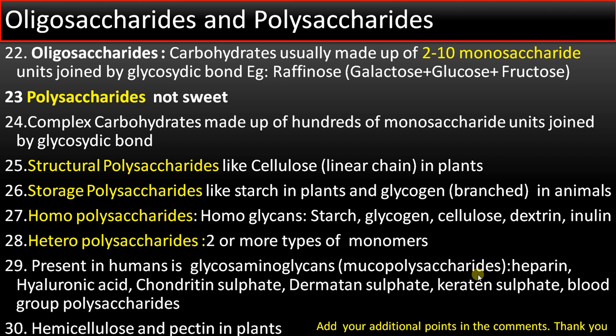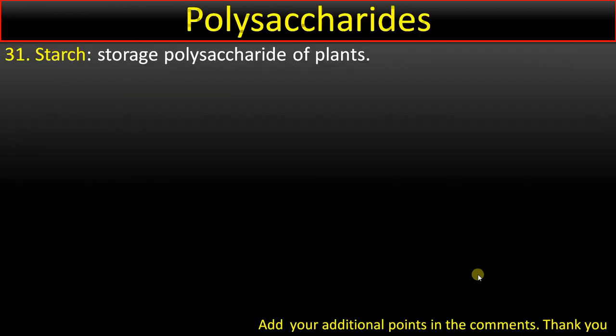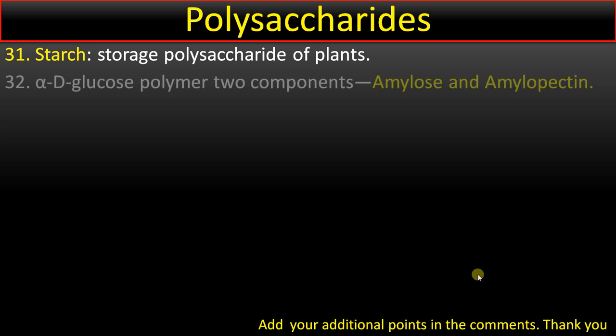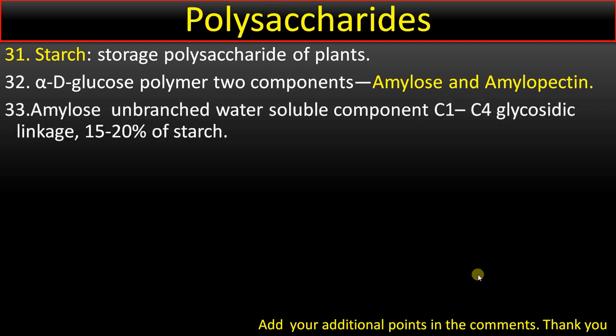Point number 30: hemicellulose and pectin are carbohydrates present in plants. Point number 31: starch is a storage polysaccharide in plants. Point number 32: it is an α-D-glucose polymer with two components — amylose and amylopectin. Amylose is the unbranched, water-soluble component with α-1,4 glycosidic linkage, forming 10 to 20 percent of starch.